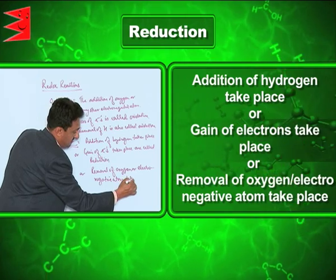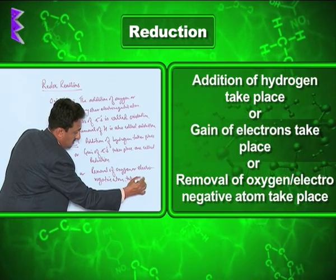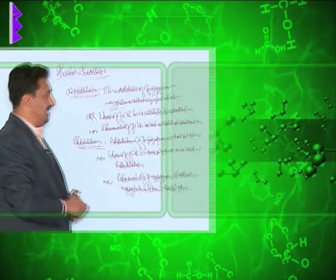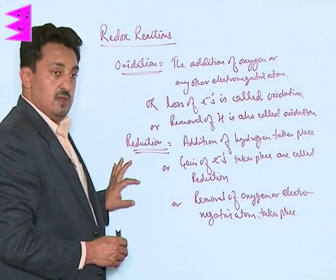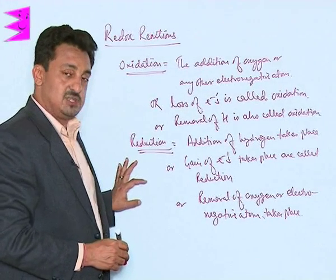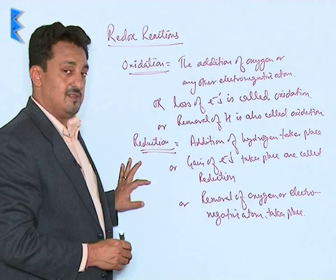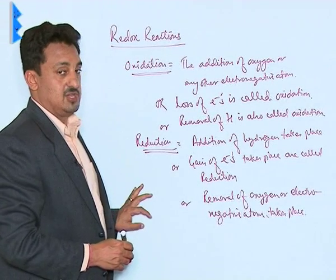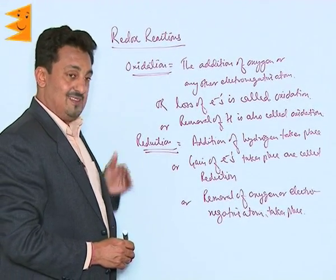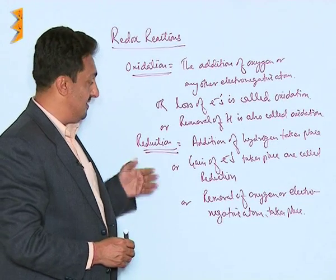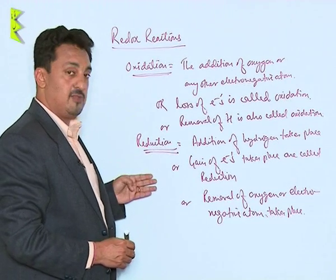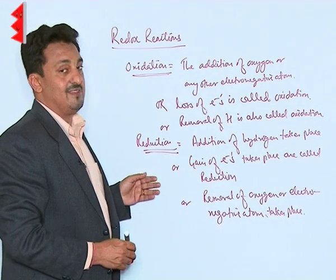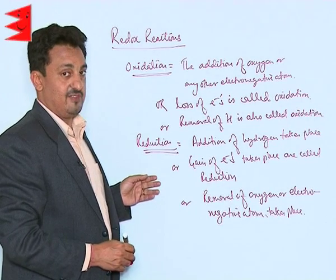The removal of an electronegative element takes place in reduction. So these are the basic definitions and methods of understanding what exactly oxidation and reduction are. Let us take a few examples in order to understand these two types of reactions more clearly, so that we can understand what exactly redox reactions are.